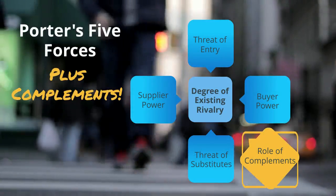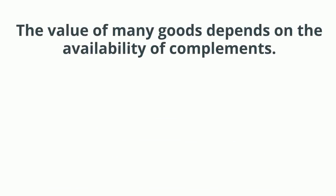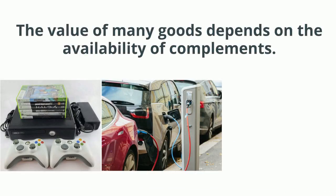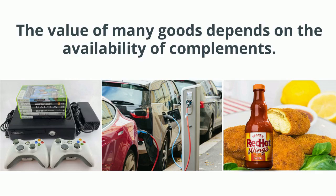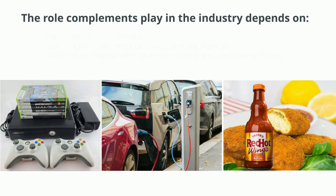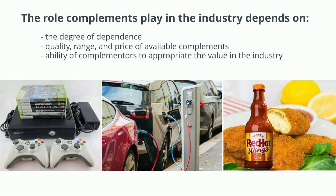And finally, we have the role of complements. The value of many goods depends on the availability of complements, like games for your Xbox, a charging station for your electric vehicle, and buffalo sauce for your veggie chicken nuggets. The role complements play in the industry depends on the degree of dependence, the quality range and price of available complements, and the ability of complementers to appropriate the value in the industry. For example, the lack of charging stations initially made the EV industry less attractive, whereas there's plenty of good buffalo sauce alternatives for your nuggets.